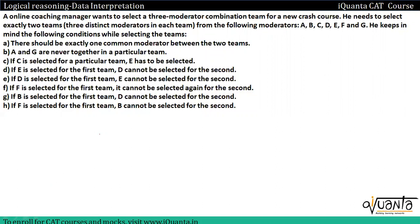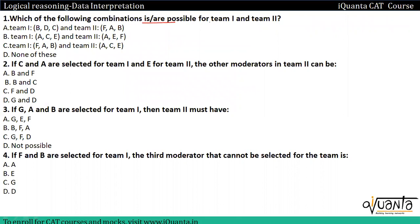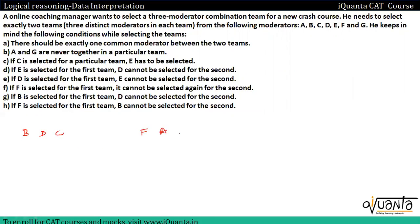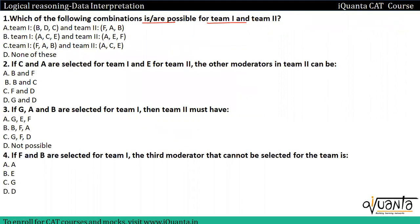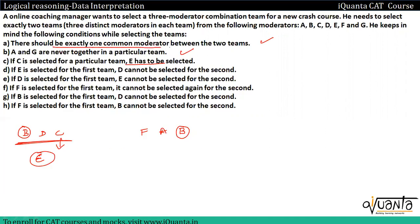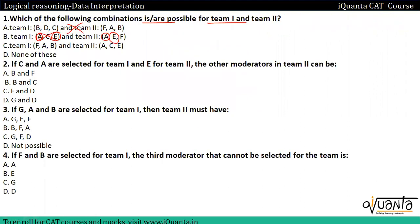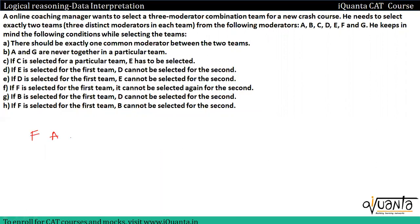Which of the following combinations are possible for team T1 and team T2? Option 1: BDC and FAB. The common moderator is B. A and G are never together — correct. C is selected for a particular team, so E has to be selected. We can see C is here, so we need E in this team, but we don't have it — so the first option is eliminated. Second option: directly eliminate because we have two common moderators A and E, but there should be exactly one common moderator.